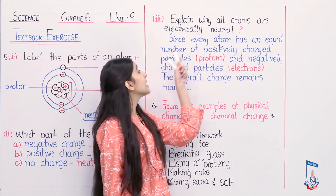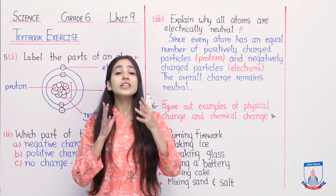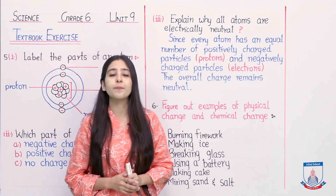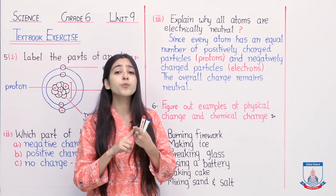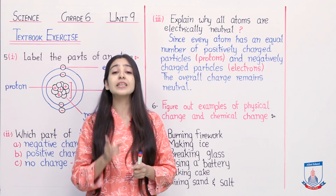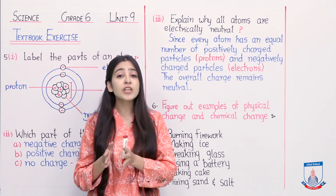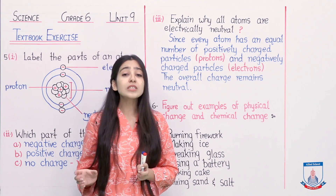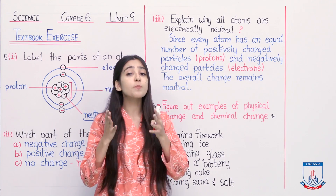Since every atom has an equal number of protons and electrons - in whatever atoms we have, every atom has one thing in common: the number of protons is equal to the number of electrons. For example, if a hydrogen atom has one proton inside it, then it also has only one electron. That is why positively charged particles are equal to negatively charged particles.